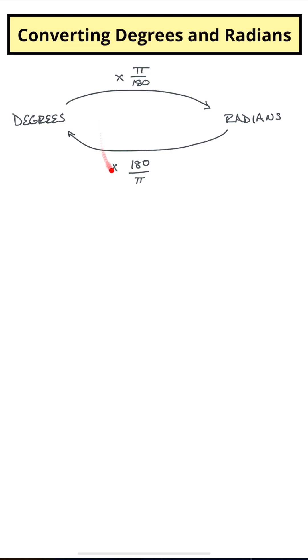I know when I had to remember how to do this, I always got confused on which one to use because I started setting these things up as proportions. I knew that 360 degrees was equal to 2 pi radians.